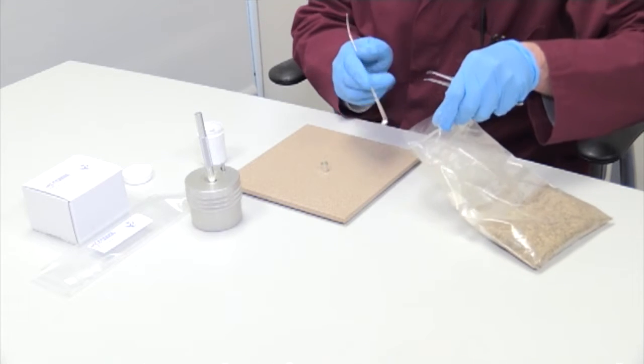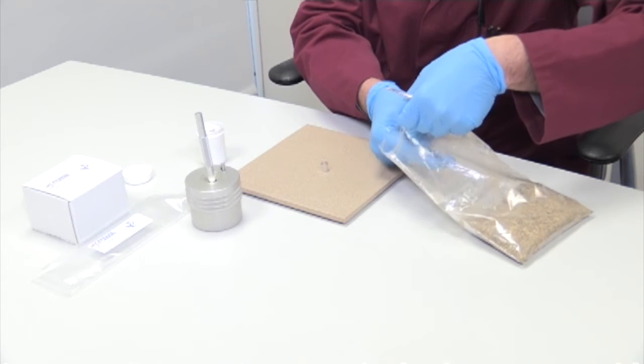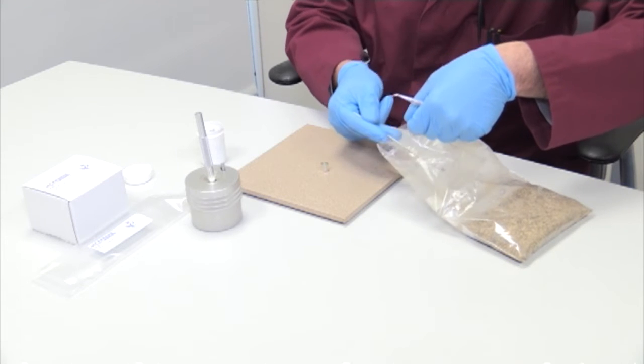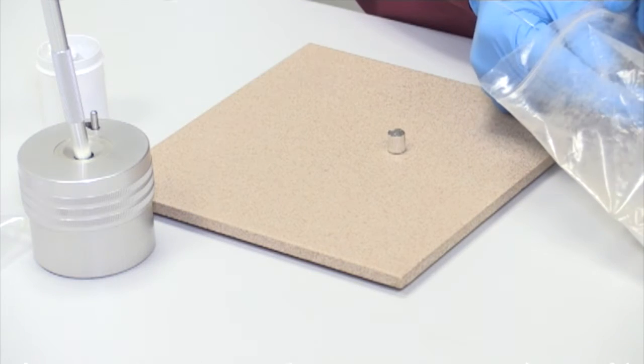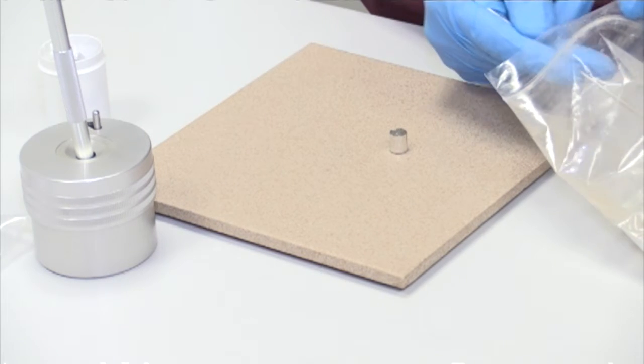A pre-weighed capsule is placed on a clean surface, and the coarse ground sample is transferred into the capsule using a suitable spatula.